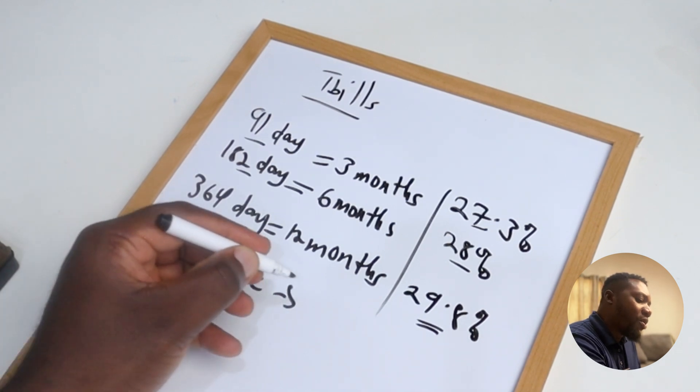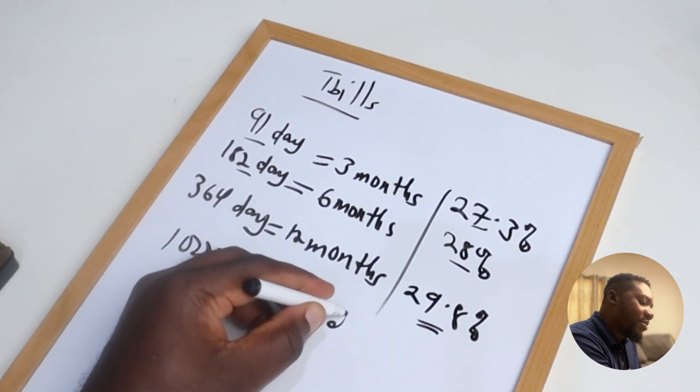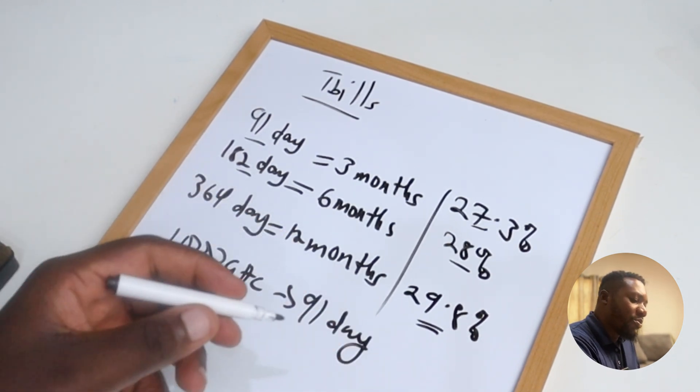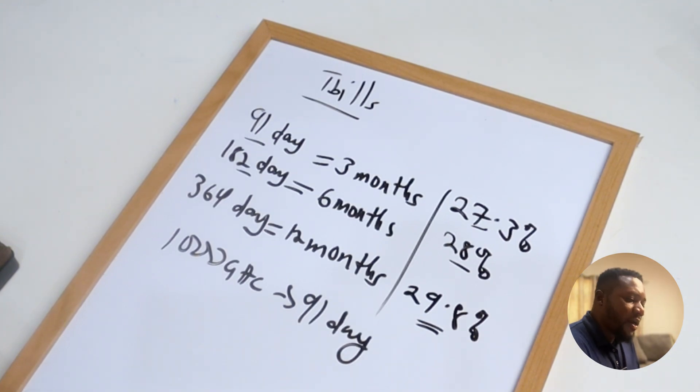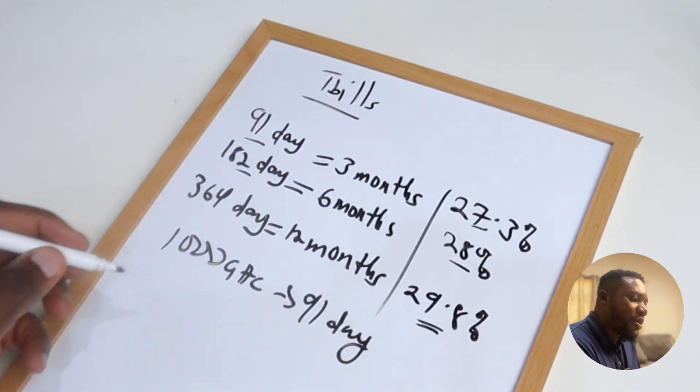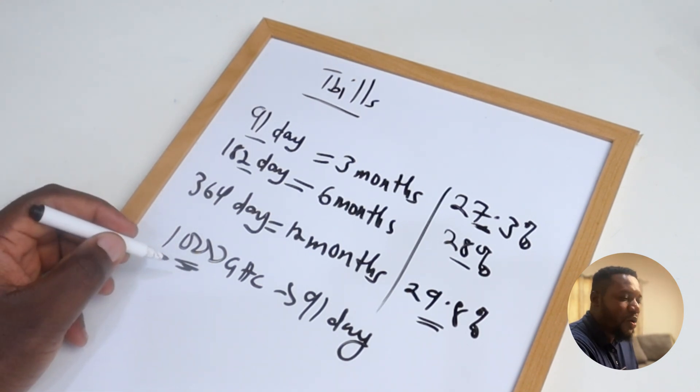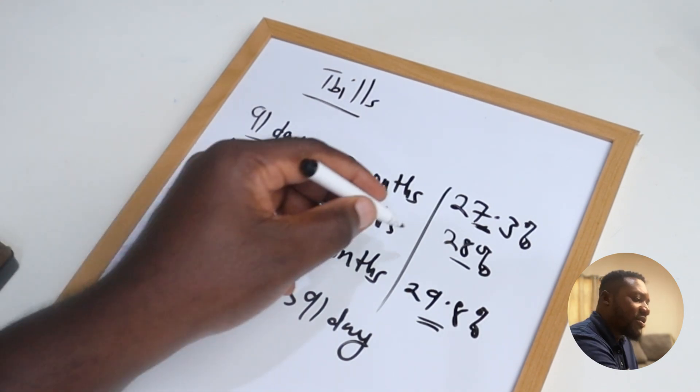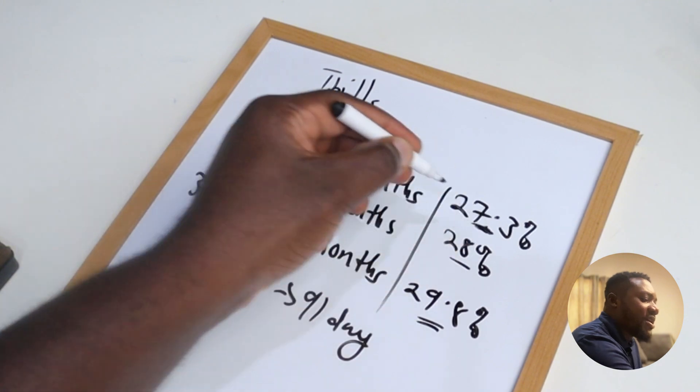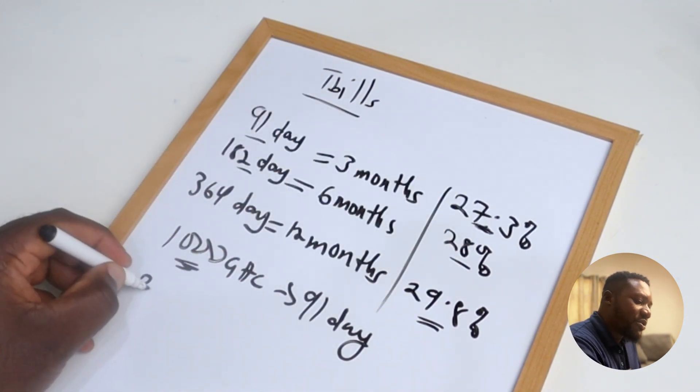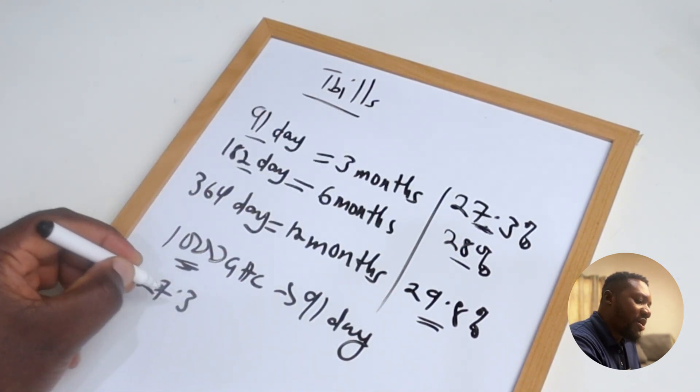So if for example you take 1000 Ghana cedis and then you invest in a full 91 day bill, or you purchase the 91 day bill, in three months time you are not going to get 27.3 percent on your 1000 Ghana cedis.